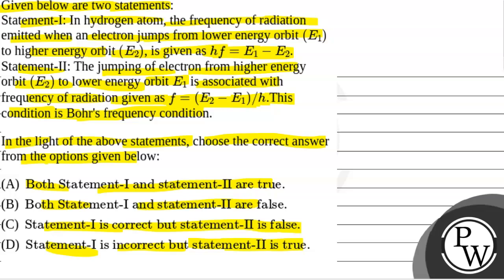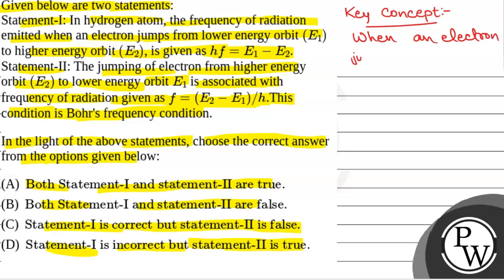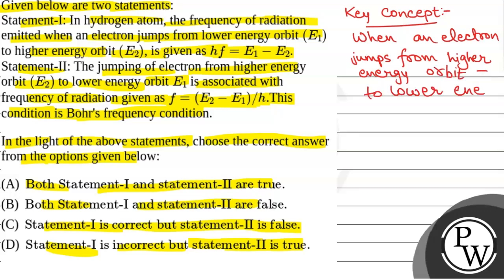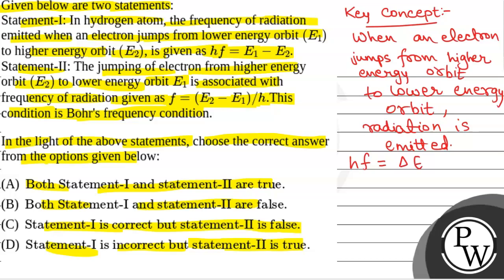We will solve this question. First of all, we will see what the key concept written in this question will be. When an electron jumps from higher energy orbit to lower energy orbit, radiation is emitted, and the frequency of this radiation is given by the formula Hf is equal to delta E, that is, change in energy.